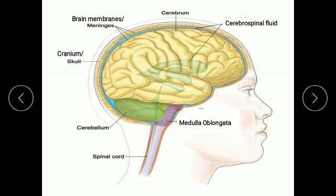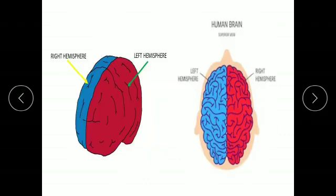The brain is connected with the body through spinal cord. The cerebrum is the largest and most complex part of the brain. It is divided into two similar halves, right and left, which are known as cerebral hemispheres. You can see cerebral hemispheres over here — right hemisphere and left hemisphere. In the surface view of the human brain, you can see the left hemisphere and right hemisphere.